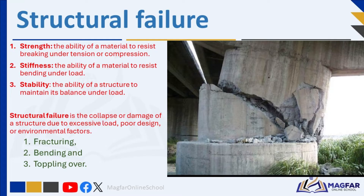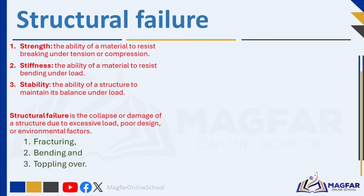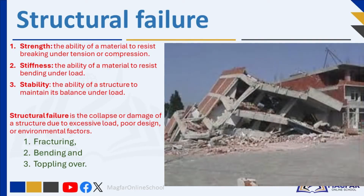Structures have to be safe. Safe structures have the following properties. First, strength, which is the ability of a material to resist breaking under tension or compression. Second, stiffness, which is the ability of a material to resist bending under load. Third, stability, which is the ability of a structure to maintain its balance under load.